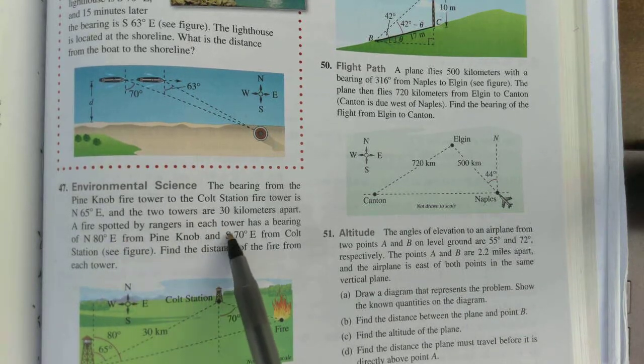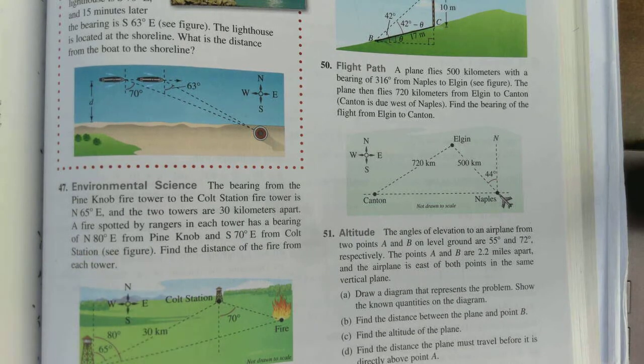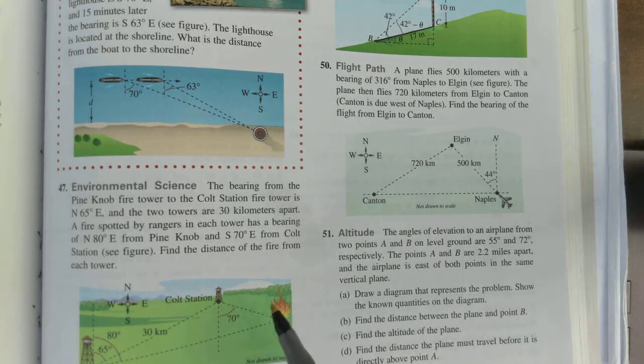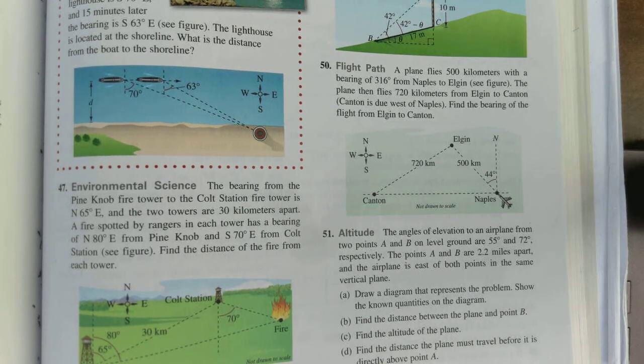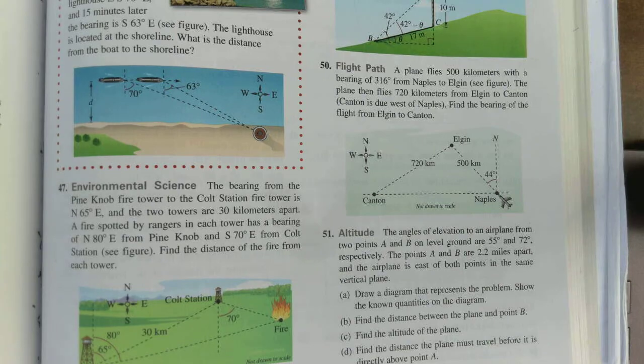A fire spotted by rangers in each tower has a bearing of north 80 degrees east. So, off of north, it's 80 degrees down from Pine Knob. And south, off of due south, you are 70 degrees east from Colt Station. And then, we're supposed to find the distance of the fire from each tower.